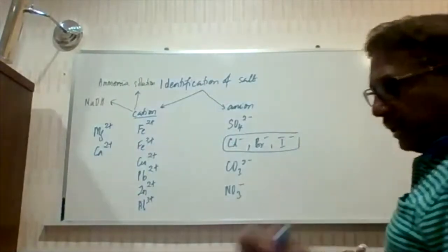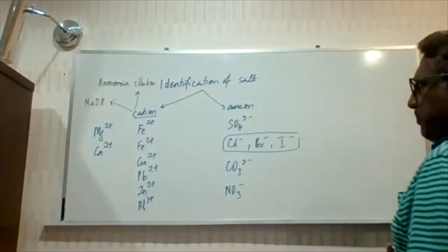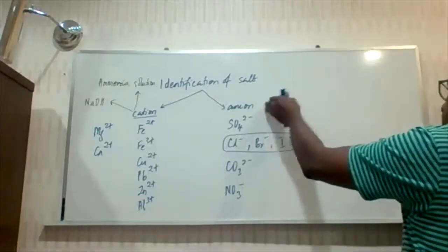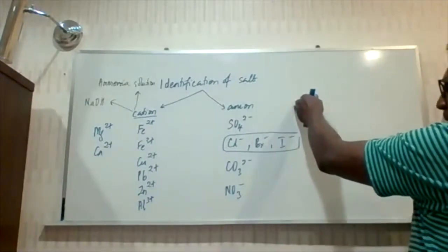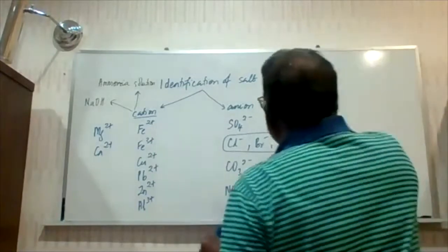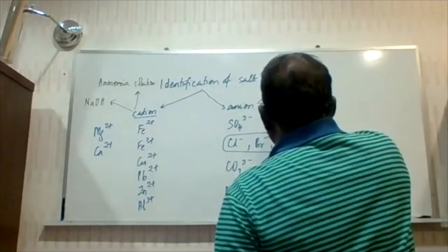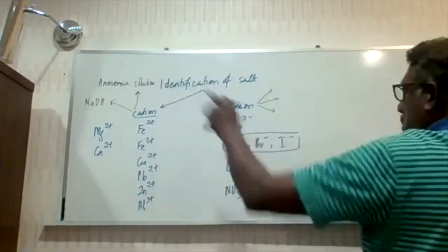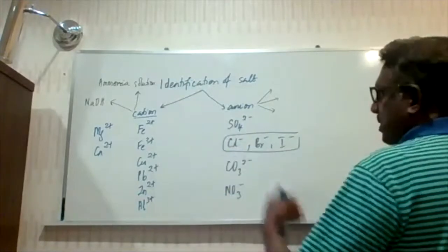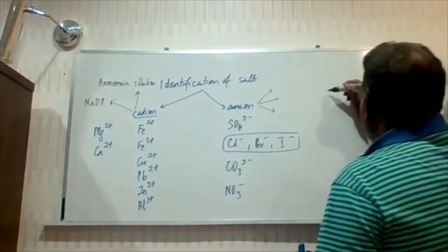It's the OH⁻ ions that it's going to contribute, okay. For anions, they have their own separate tests. The cation has its own set of tests and the anion has its own set of tests, which every student must recognize. We fuse the results together and we get the salt.